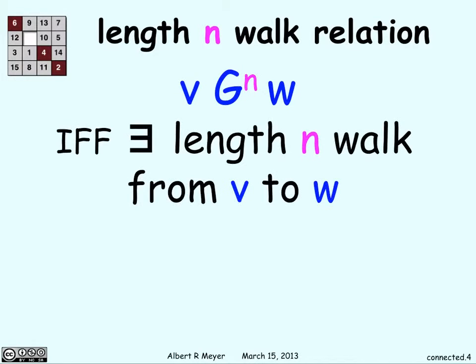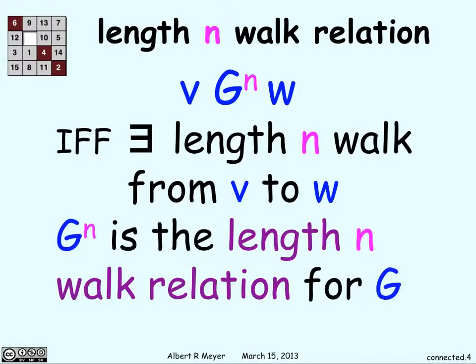Now we're going to talk about the length n walk relation. What this means is with two vertices v and w, there is this G^n relation between v and w if there exists a length n walk from v to w. And G^n is called the length n walk relation for G. So basically, if you can find a way to go from v to w in exactly n steps, then G^n applies from v to w.